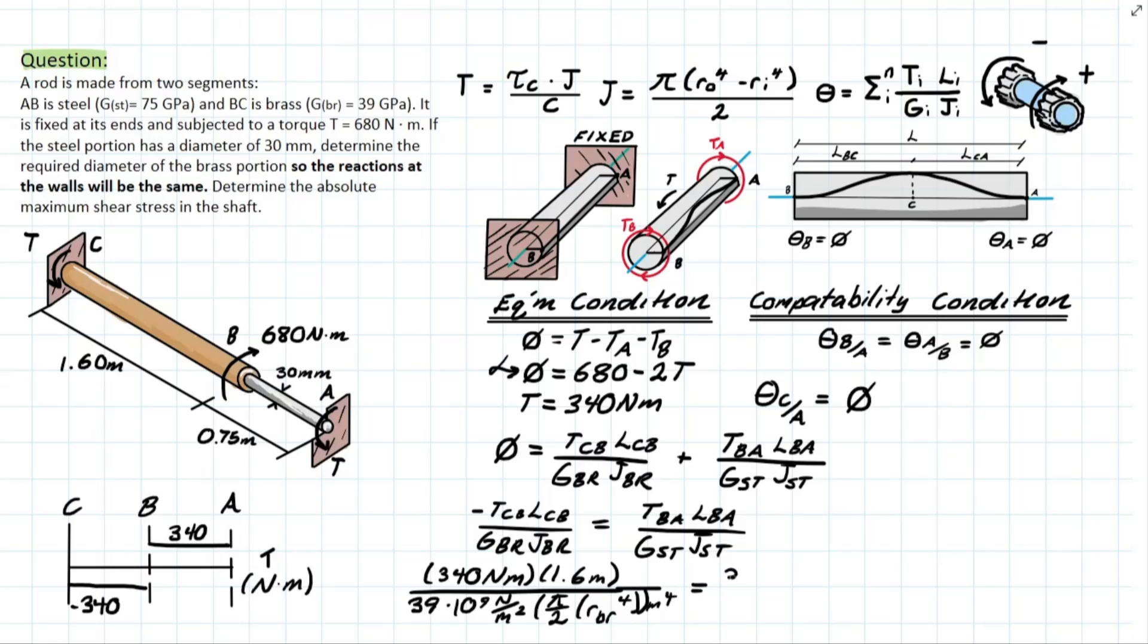It's going to be a very similar thing on the other side as well. We have 340 times 0.75, and once again this is for the section BA so we're considering the steel, taking the length of BA times the shear modulus BA or ST, and that number is going to be 75 times 10 to the 9, and the polar moment of inertia. And we know what this value is going to be - we're given it in millimeters so we have to convert it to meters and then divide it by 2 so we get a radius which is going to leave you with 0.015 to the power of 4, meters to the 4.